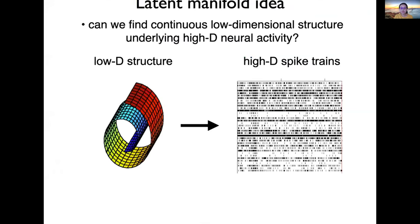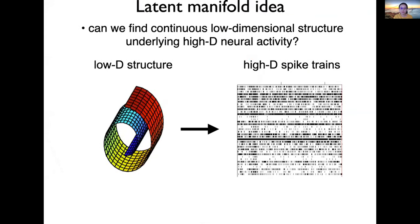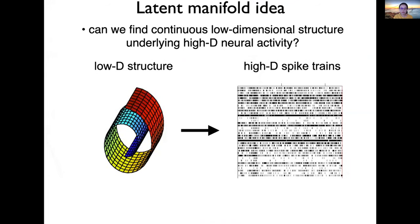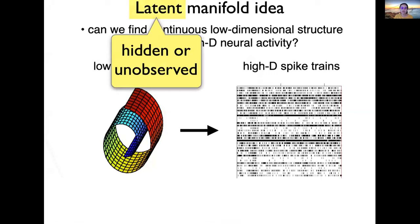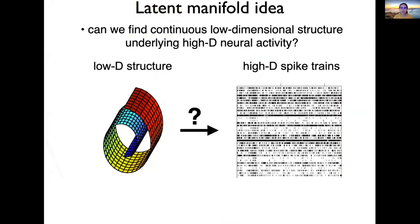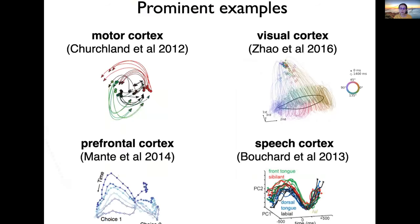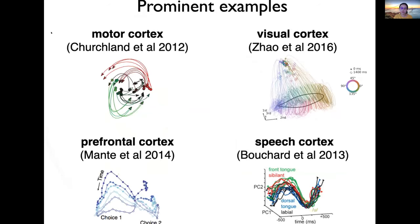Let me talk about this latent manifold idea. Latent here means unobserved or hidden. Can we find some continuous low-dimensional structure underlying high-dimensional spiking data? The latent manifold idea tells us the answer could be yes. There are many examples showing that there exists some low-dimensional dynamics underlying multiple cortices in the brain, and these dynamics are the latent temporal structures.